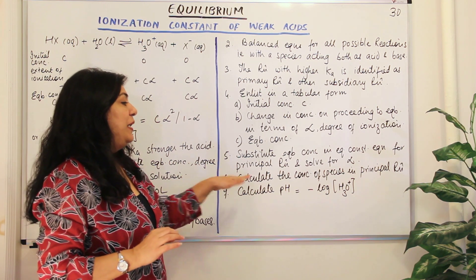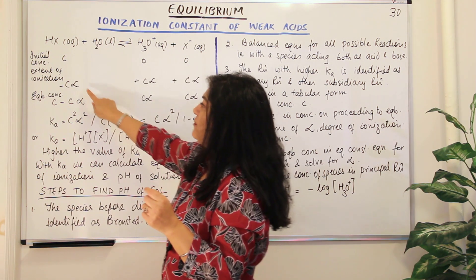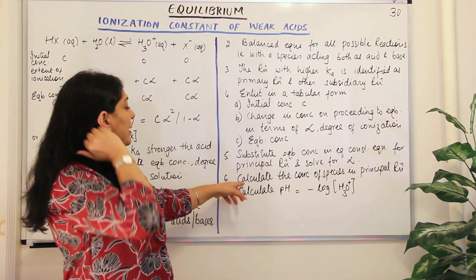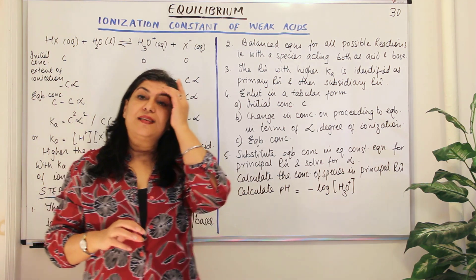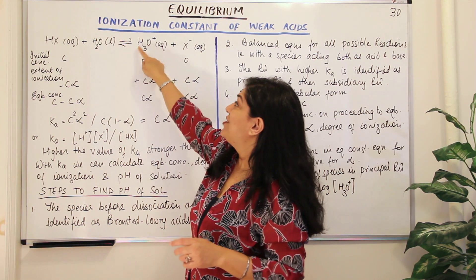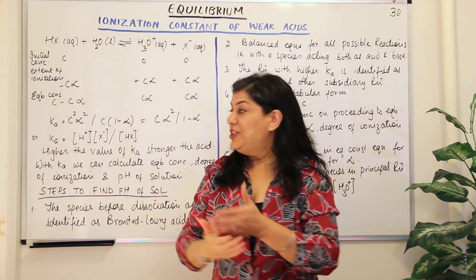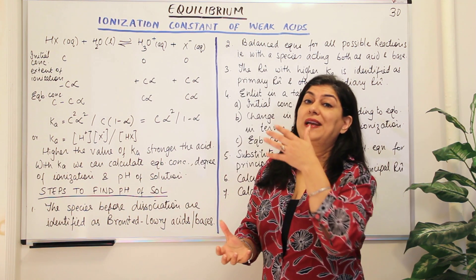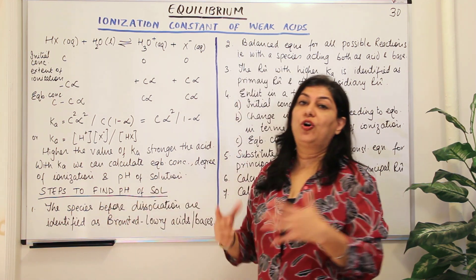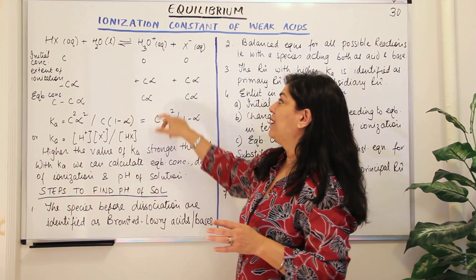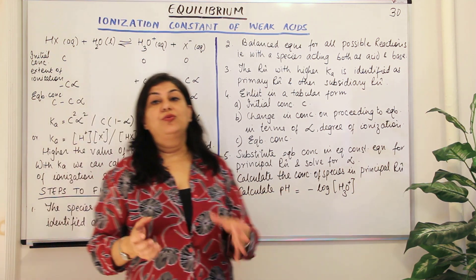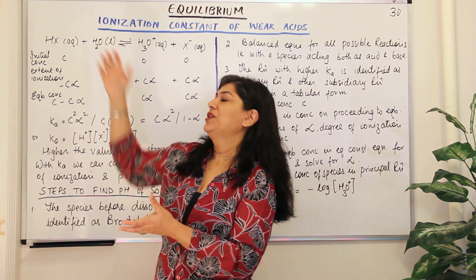The next step is to calculate the concentration of species in the principal reaction. Once you have found alpha, substitute it back to get equilibrium concentrations according to the stoichiometry. This gives you the concentration of H3O+ at equilibrium. To calculate pH, take the negative log of the hydronium ion concentration — that gives you the pH of the solution, telling you how acidic the weak acid solution is.